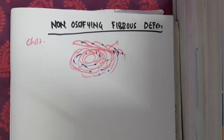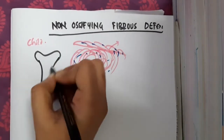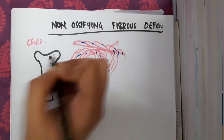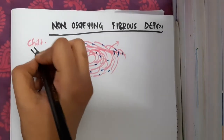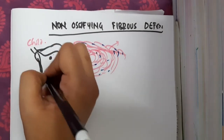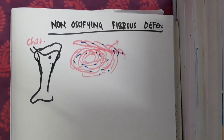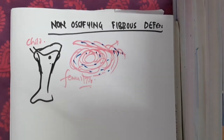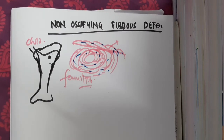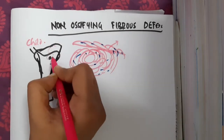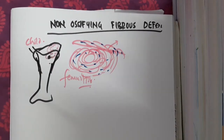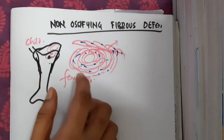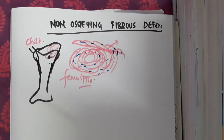Non-ossifying fibrous defect is mainly seen in the metaphysis of long bones, particularly the femur and tibia. It is an eccentric, lobulated lesion. On X-ray, you will see a lobulated lesion with sclerotic scalloped edges.